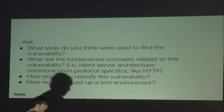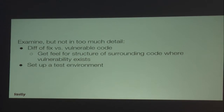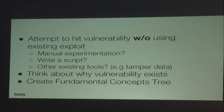In the first pass, think about the kinds of tools that were used to find that vulnerability and how you would classify it if you found it in production, and how you would set up a test environment. In the second pass, examine — but not in too much detail — the structure surrounding the vulnerable code. Perform a diff between the fixed and vulnerable code, then set up a test environment. In the third pass, attempt to trigger the vulnerability without using an existing exploit — by manual experimentation, writing a script, or a tool like tamper data. Then think about why that vulnerability exists, and create a fundamental concepts tree.